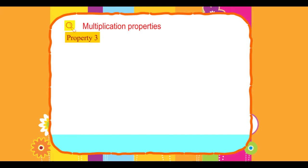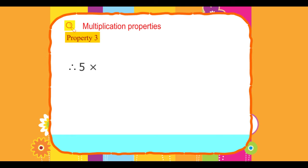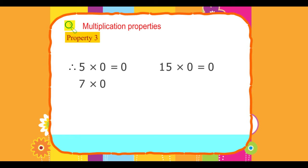Property 3. When any number is multiplied by 0, the product is 0. For example: 5 × 0 = 0, 15 × 0 = 0, 7 × 0 = 0, and 9 × 0 = 0. This is the zero property of multiplication.